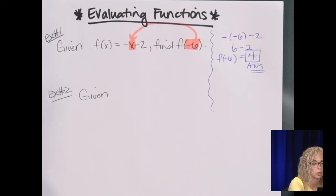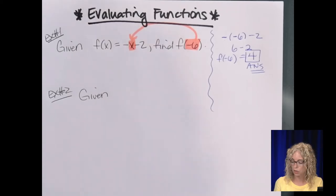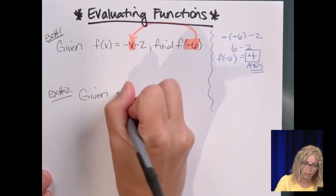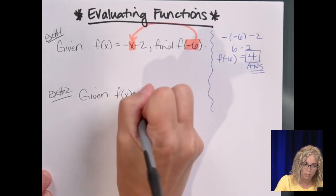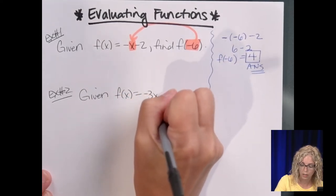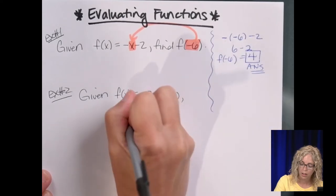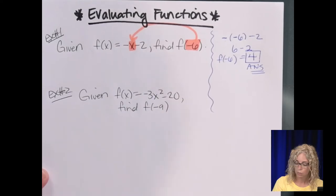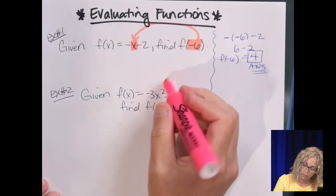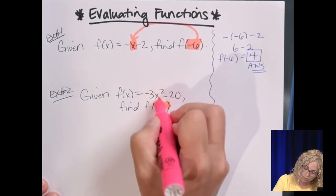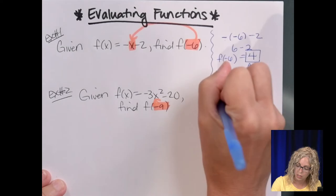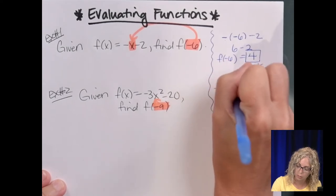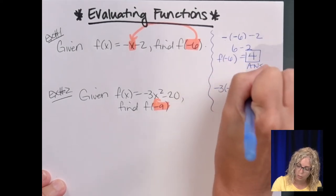Okay, now let's take a look at a level two. Our function is now quadratic. So given f of x equals negative three x squared minus 20, find f of negative nine. So we take and we plug in the negative nine for the x.